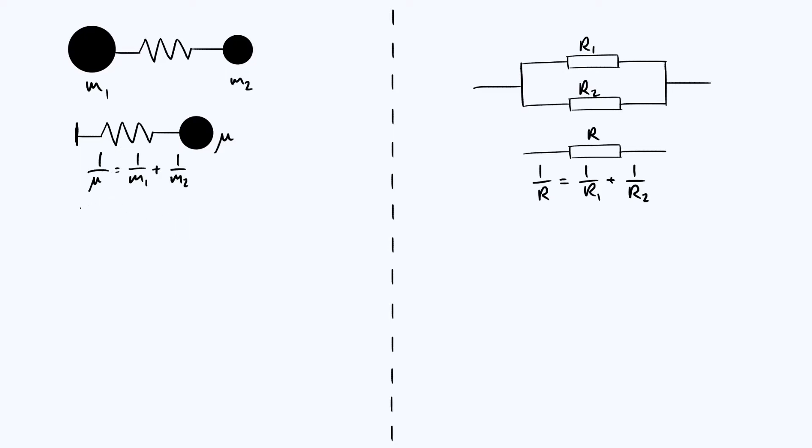So you'll notice that the reduced mass equation over there and the effective resistance equation have very similar forms, in that they take the form of reciprocal of some overall quantity is the sum of the reciprocals of some individual quantities. When I was thinking about these two equations recently, I wanted to see if I could find a way of explaining why those two equations have such a similar form. In order to explain this, let's first go through the derivation of the resistance equation.